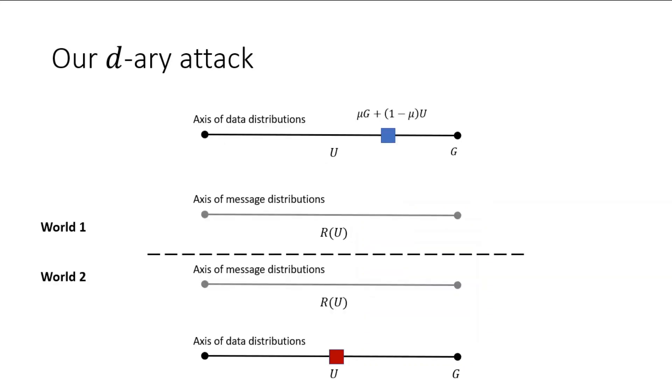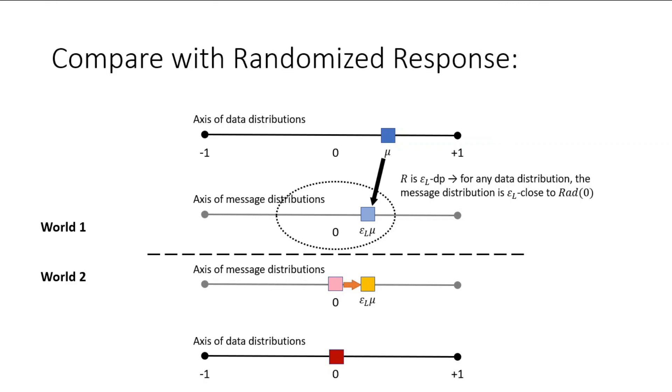Specifically, we consider two worlds. In one world, the data is drawn from a mixture between u and g. In the other world, the data is drawn from uniform. Due to privacy, the message distribution in the first world experiences contraction, while in the second world, messages from honest users have distribution R of u. And the corrupted users shift their message distribution to that of the first world. The special property g has is that the message distribution R of g is epsilon over root d close to R of u.